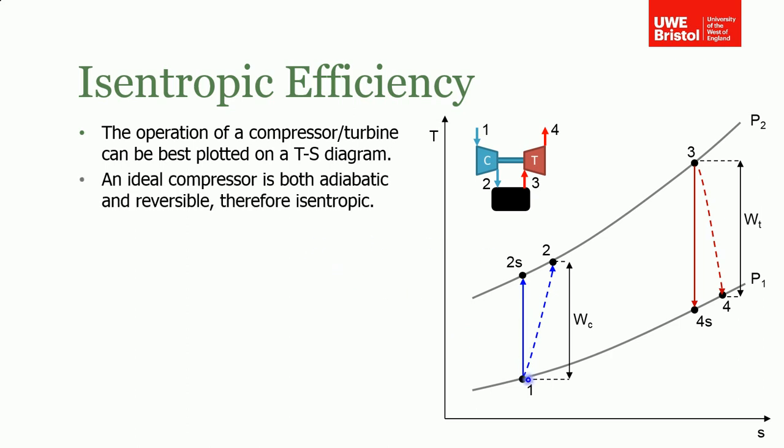If the compressor is isentropic, then it's reversible, so it would be a straight line on this plot. But we know that's not the case. We have to put in more work than is actually required. We don't end up at 2s—the subscript s referring to the isentropic, it being the isentropic point—we actually end up here. Conversely, when we're coming back from the turbine, we don't extract as much work as we would like. We end up extracting less. Entropy's got to increase or stay the same.